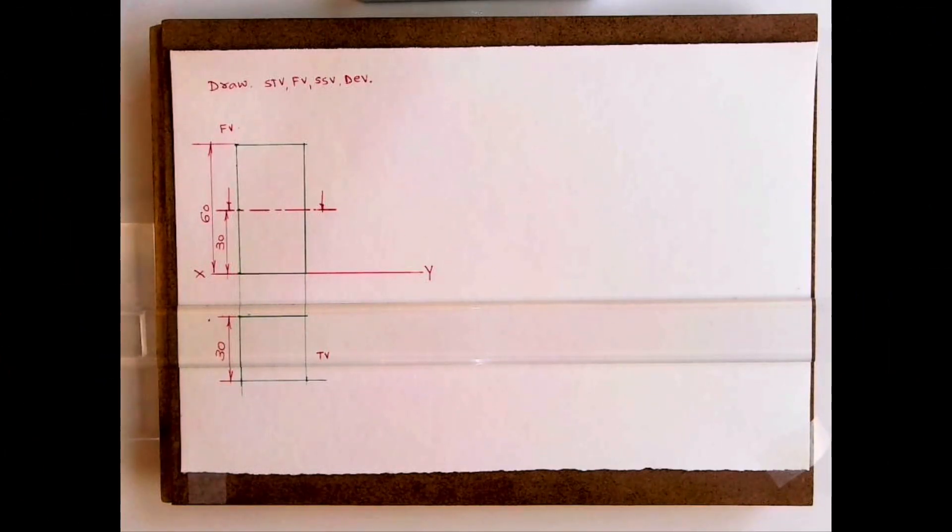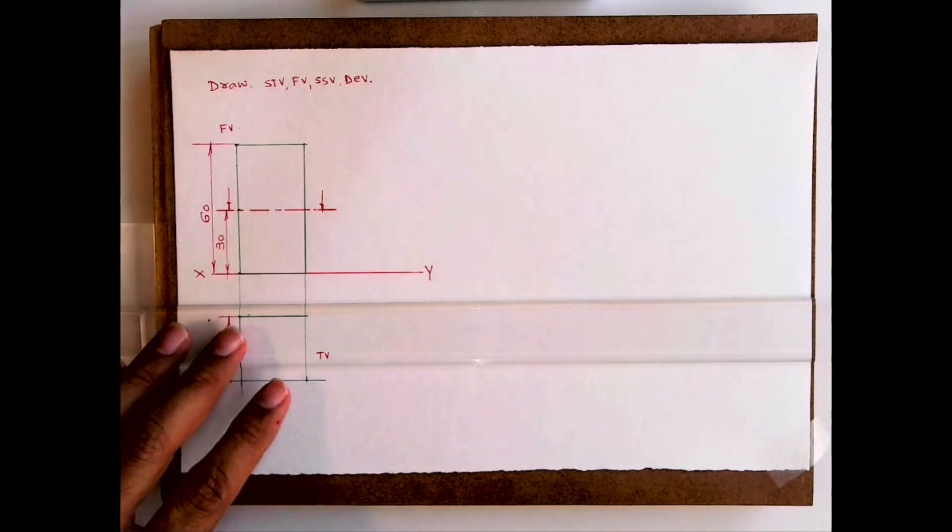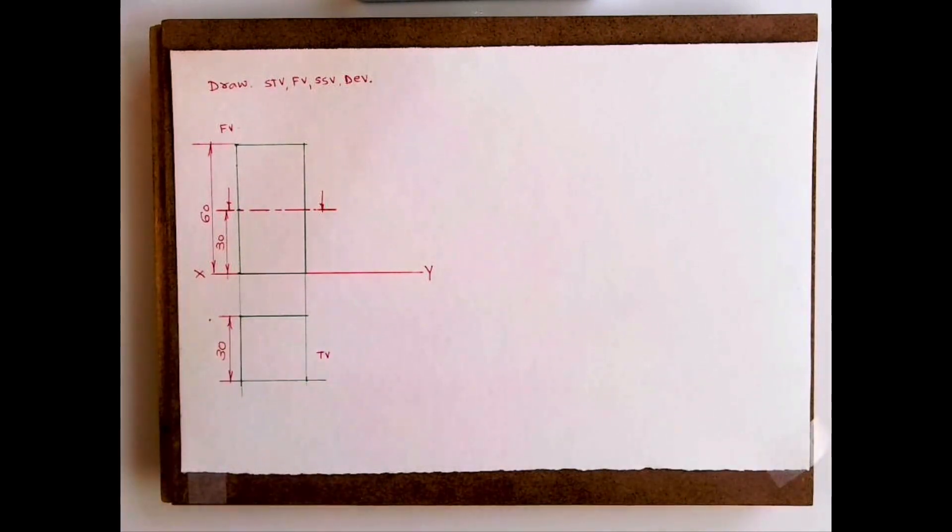Welcome to technical drawing. Today we're going to learn this sum. We have to draw sectional top view, front view, sectional side view, and development. They will give you this sum where we have a square prism. Front view and top view will be given to you, along with the cutting plane.